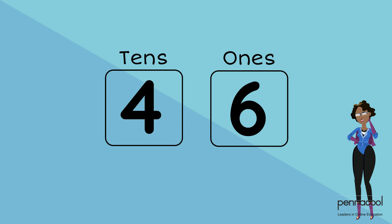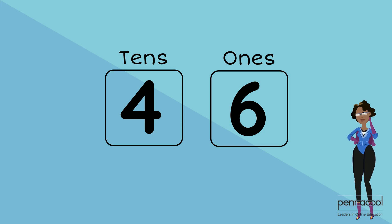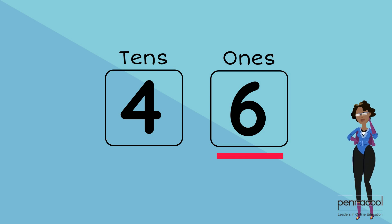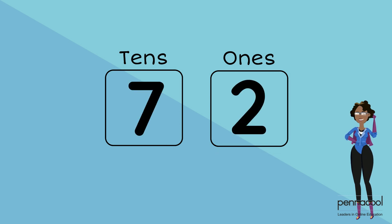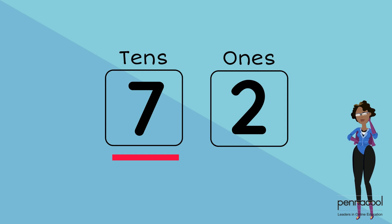Let's look at the numbers below and decide what place the underlined digit is in. The first number is 46 and our underlined digit is six. Six is in the ones column — this means there are only six ones in this number. Our next example is 72 and the underlined number is seven. Seven is in the tens column, which means there are seven tens in this number.